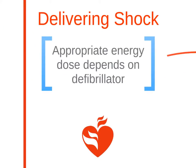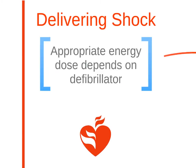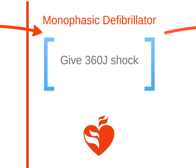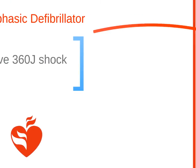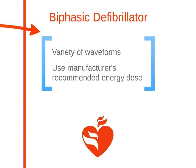When delivering a shock, determine energy dose according to the type of defibrillator. With a monophasic defibrillator, deliver a single 360 joule shock. If subsequent shocks are needed, continue with the same energy dose. A biphasic defibrillator has a variety of waveforms — determine the appropriate shock dosage according to the manufacturer's recommendation.